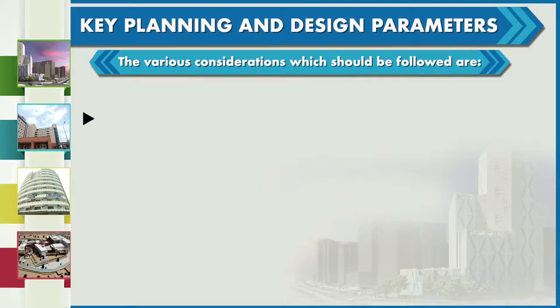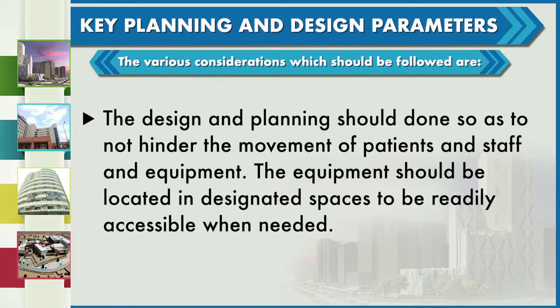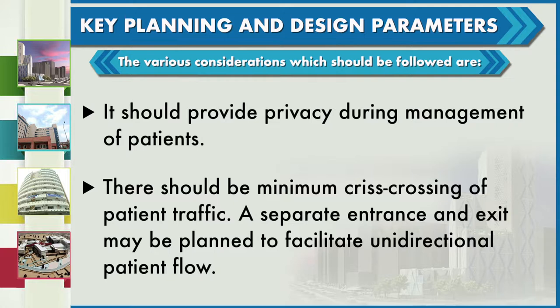Planning and design parameters: the design and planning should be done so as to not hinder the movement of patients, staff, and equipment. The equipment should be located in designated spaces to be readily accessible when needed. It should provide privacy during management of patients. There should be a minimum criss-cross of patient traffic, and separate entrance and exit may be planned to facilitate unidirectional patient flow.